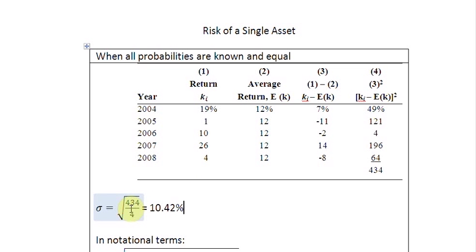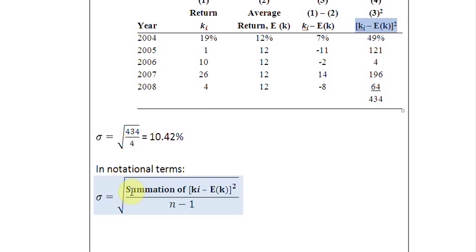If you want to write the same result in notational terms so that it serves you as a formula, you will realize that in the numerator of this fraction, you wrote this number 434, which is the sum total of all this calculations. So what we have written here is summation of the difference between the actual return and the expected return squared. And in the denominator, we have written n minus 1, that is number of time periods minus 1. So then that was pretty simple.